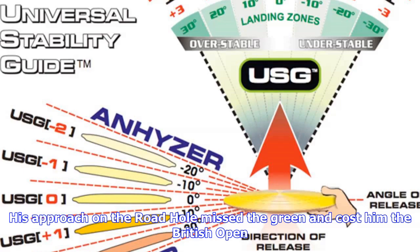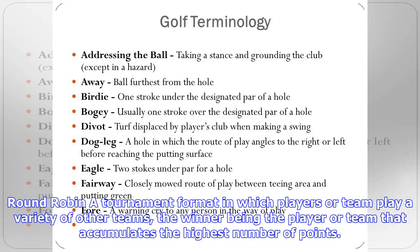Pace: the speed of the golf swing — he had a beautiful pace to his swing — or the speed of the greens. The greens at the PGA Championship had a quick pace, which favored the better putter.